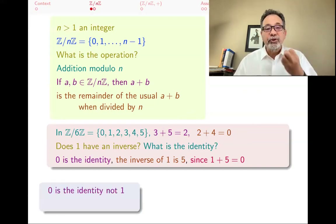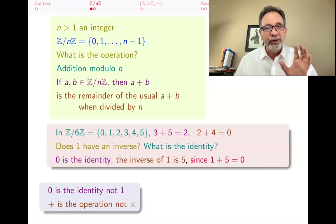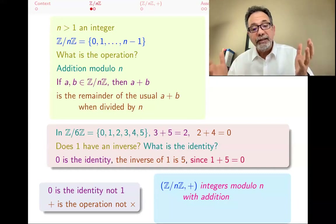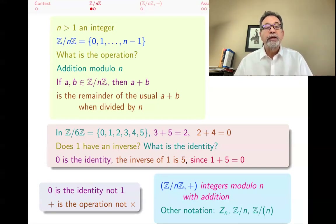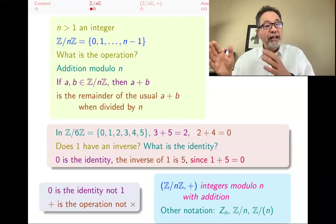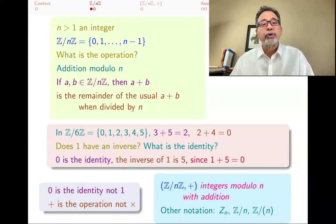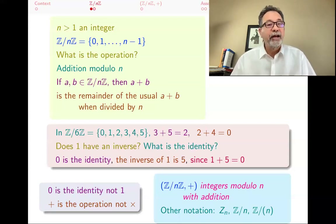I want to emphasize that in this group, 0 is the identity, not 1, and the operation is plus, not multiplication — and that can be confusing. Z mod nZ with n plus denotes integers modulo n with addition. Other notations authors use include Z sub n, Z slash n, or Z slash (n). The notation Z mod nZ — Z almost divided by n — will make more sense when we get to quotient groups. But for now, we're just thinking of it as notation.